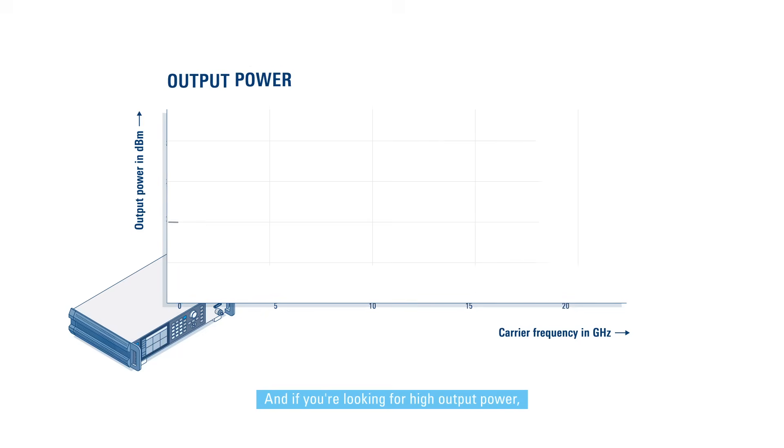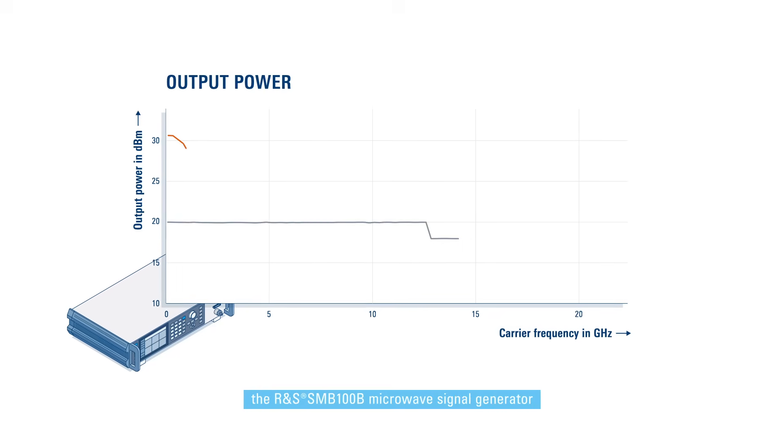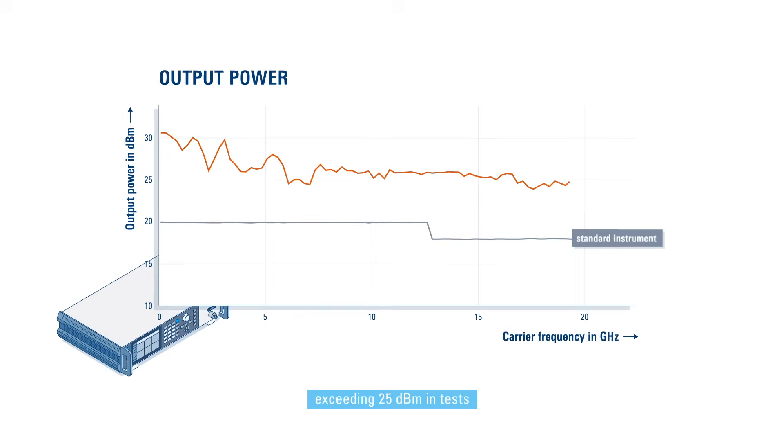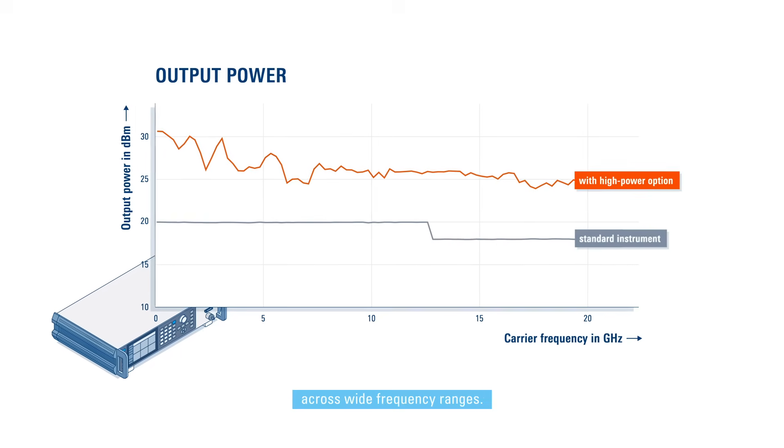And if you're looking for high output power, the SMB100B Microwave Signal Generator is the right choice for you, exceeding 25 dBm in tests across wide frequency ranges.